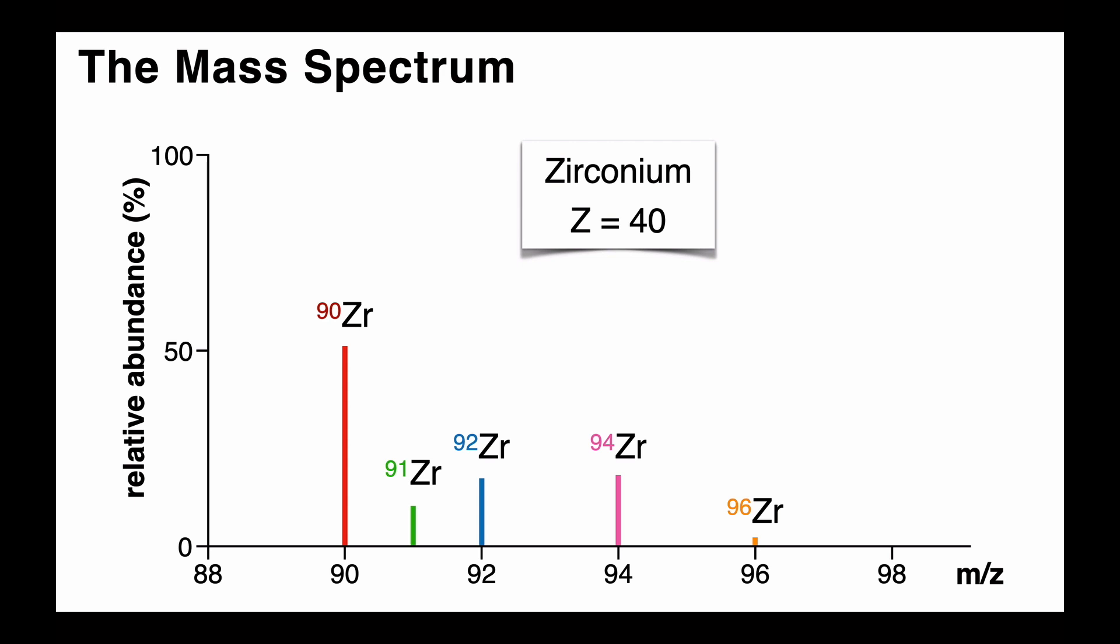On the x-axis we have the mass to charge ratio. When the charge is 1, meaning we have a plus 1 charge for the ions, then the x-axis represents the atomic mass.